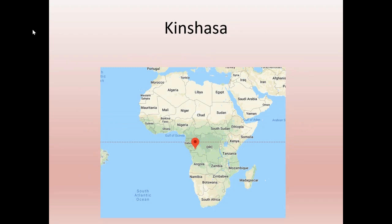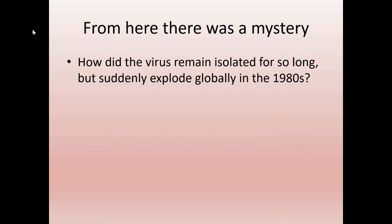Here's Kinshasa, Africa. There's a river that comes through this town named the Ebola River — yes, this is the same region where the Ebola virus originates. One strange thing about this virus is we don't actually know how it went global so fast in the 1980s.